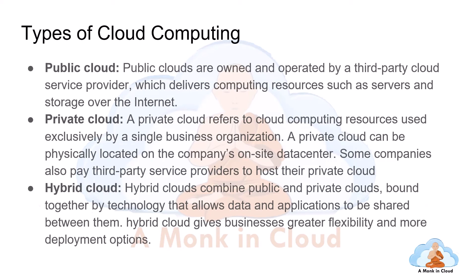And finally, the hybrid cloud. Hybrid cloud combines public and private clouds, bound together by technology that allows data and applications to be shared between them. 90% of the time, people go with hybrid cloud — they will have some mission-critical applications within their on-premises data center and some applications within the cloud. They connect all these using different cloud offerings such as Direct Connect in AWS and ExpressRoute in Microsoft Azure. So you will have applications hosted on the public cloud and applications in your on-premises data center, with a channel open between them.